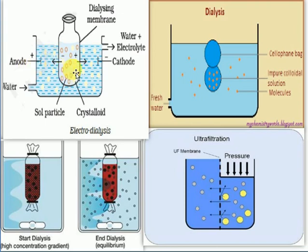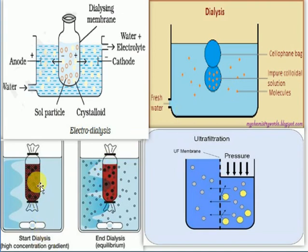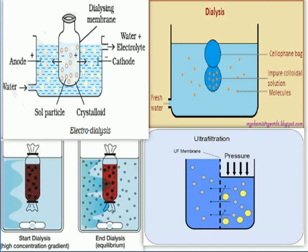To summarize purification: to separate crystalline impurities from a colloidal solution using electricity, that is called electrodialysis. In normal dialysis, two cells are present with a semipermeable membrane. When the bag is placed in water, impurities slowly diffuse from the cell through the membrane into the surrounding water — this is the dialysis method. Using these methods, we can purify and prepare colloidal solutions.